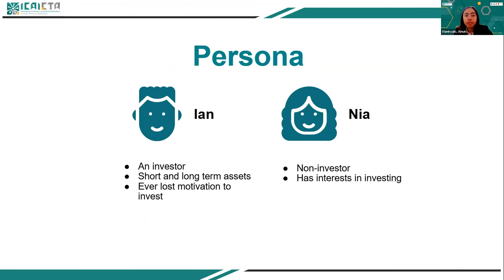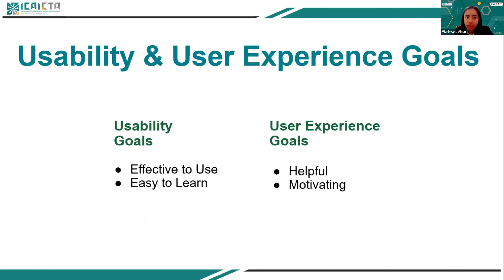We defined two personas. The first is Ayan, an investor with short and long term assets who has experienced loss of motivation to invest. The second is Nia, a non-investor who has an interest in investing. We defined the usability goals as effective to use and easy to learn, while the user experience goals should be helpful and motivating.